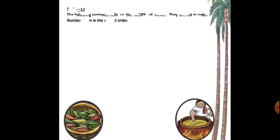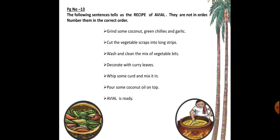Here we have sentences which tell us the recipe of avial. They are not in order — we have to number them in the correct order. The correct order is: first, wash and clean the mix of vegetable bits. Next, cut the vegetable scraps into long strips. Third, grind some coconut, green chillies, and garlic. Fourth, whip some curd and mix it in. Fifth, pour some coconut oil on top. Finally, decorate with curry leaves and the avial is ready for eating.